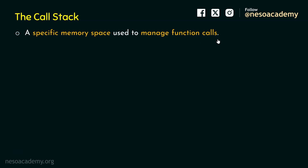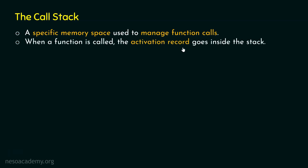Through the call stack, the computer manages function calls. Whenever a function is called, something about that function goes inside the stack — that something is an activation record of that function. When a function is called, the activation record goes inside the stack. That's why it is named the call stack — it is used to manage function calls.